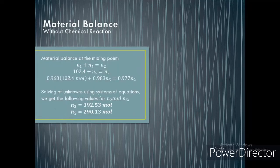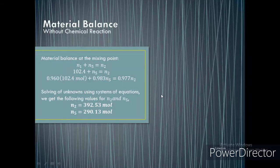For the material balance at the mixing point: N1 + N5 = N2, where N1 is the feed stream, N5 is the recycled stream, and N2 is the blended stream. With N1 = 102.4, solving the system of equations gives N2 = 392.53 moles and N5 = 290.13 moles.